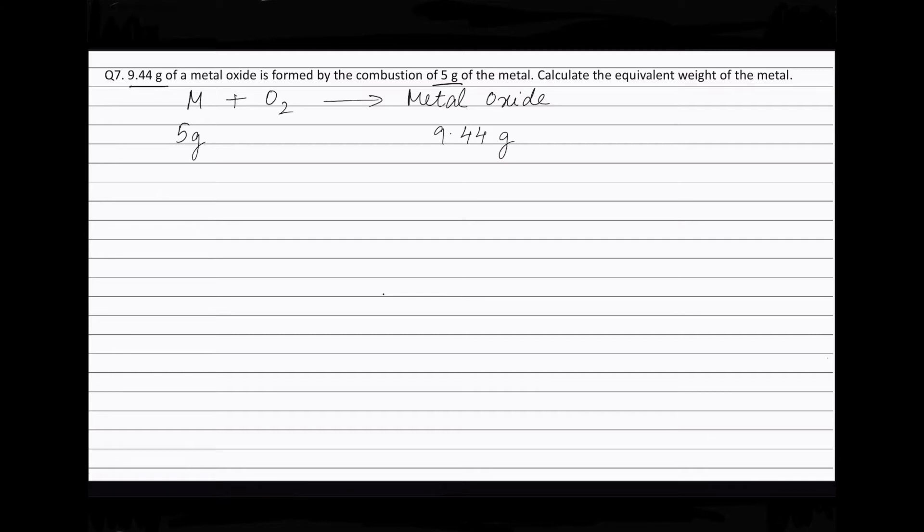Therefore, weight of oxygen will be weight of metal oxide minus the weight of the metal, that is 9.44 minus 5, which is equal to 4.44 grams.